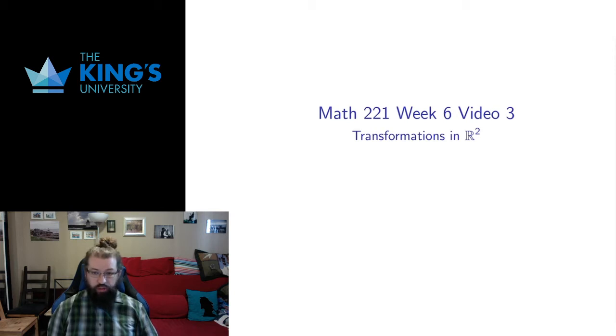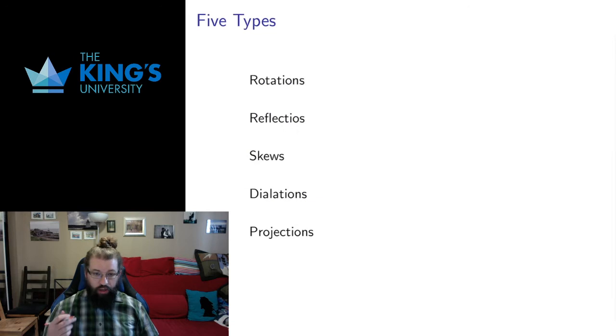Let's get into some more concrete examples and talk about transformations of R2. These are all coded by two by two matrices that send R2 to R2. It turns out there are exactly five types, and all transformations are either one of these five types or compositions of these five types.